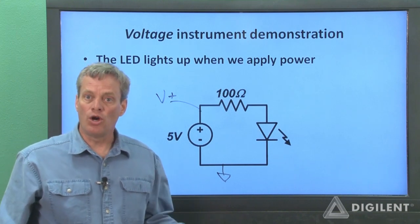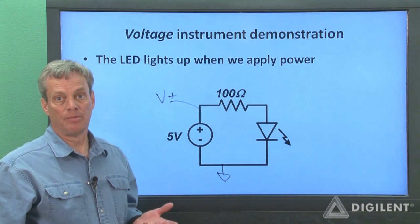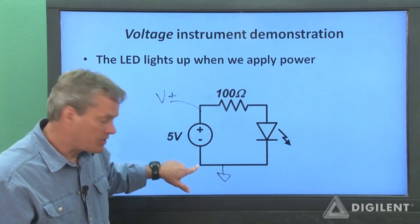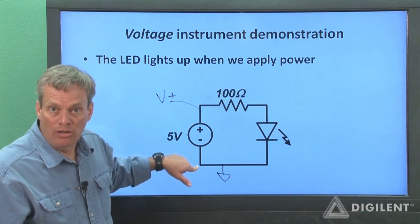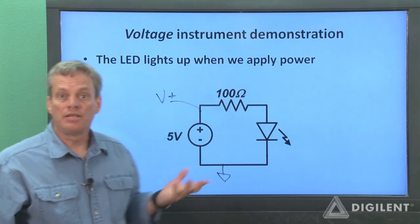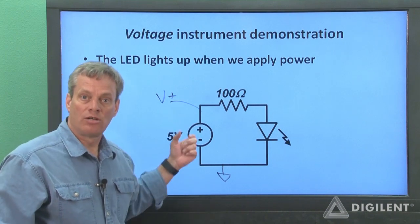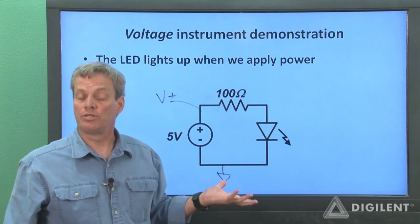We could, if we chose, use V minus on the Analog Discovery to apply the voltage difference. We'd just connect the V minus terminal down here to this point and ground up here. Since V minus is 5 volts below ground, we would still have a positive 5 volts here relative to here, which is all our circuit really cares about.